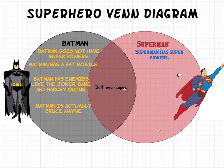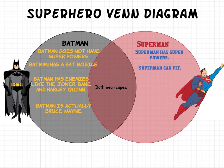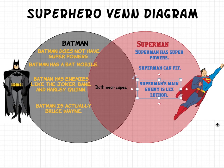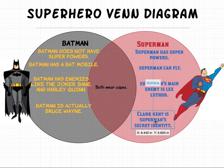Now, in the only Superman section, we need to add things that are just for him. Superman can fly. Superman's main enemy is Lex Luthor. Clark Kent is Superman's secret identity.